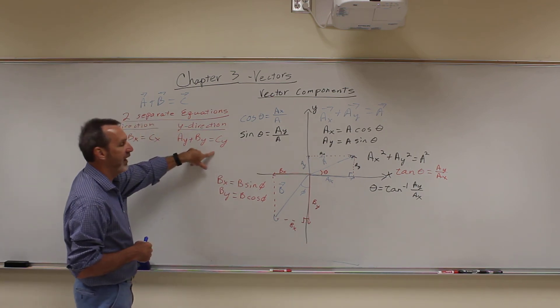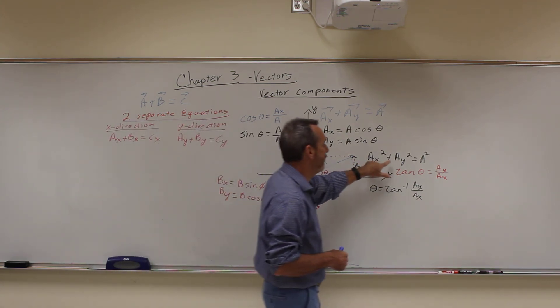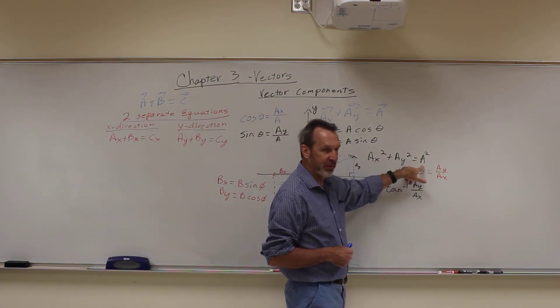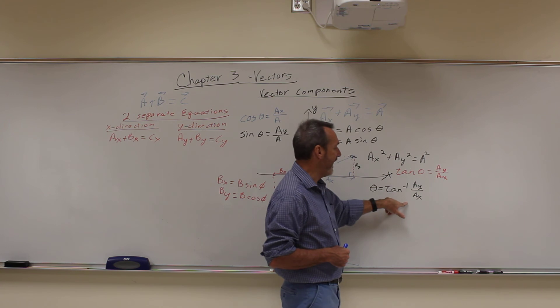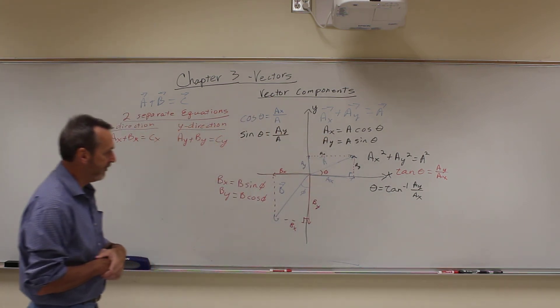Then you solve this for CX and CY. And then once you have CX and CY, you can figure out C by using the Pythagorean theorem. And you can figure out the angle by using the inverse tangent.